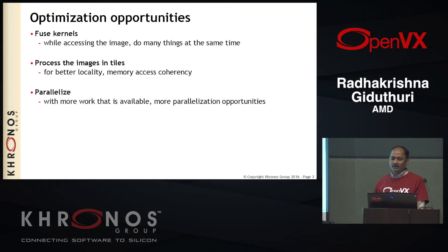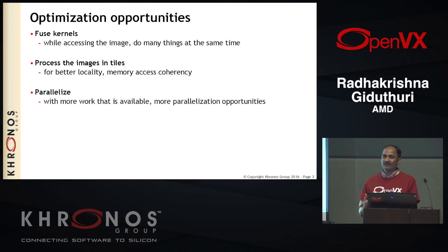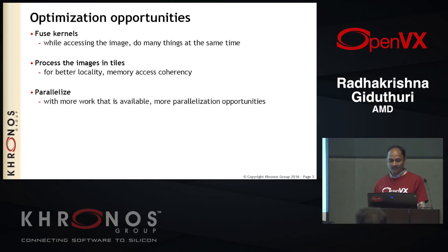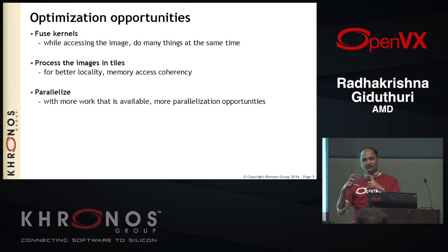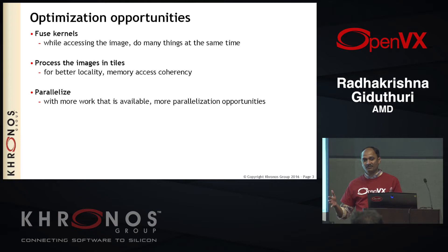The big opportunities with OpenVX graphs are: first, kernel fusion — while accessing an image you can fuse multiple operations at once, for example doing a Sobel gradient and square root simultaneously. You can also process images in tiles, say 256x256, doing all operations within that neighborhood. Additionally, with larger images and multiple hardware units available, the implementation can take advantage of all available hardware in the system.